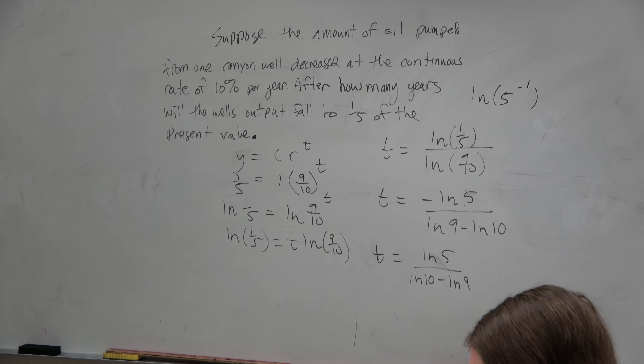Does that look like a good answer? Not really. Could we rewrite this another way? We could write 1/5 as 5 to the negative first power and bring the negative 1 out front. Or write ln of 9 minus ln of 10 in the denominator. Or distribute the negative all the way through, giving ln(5) over ln(10) minus ln(9). Just be aware of the different forms this answer could take.